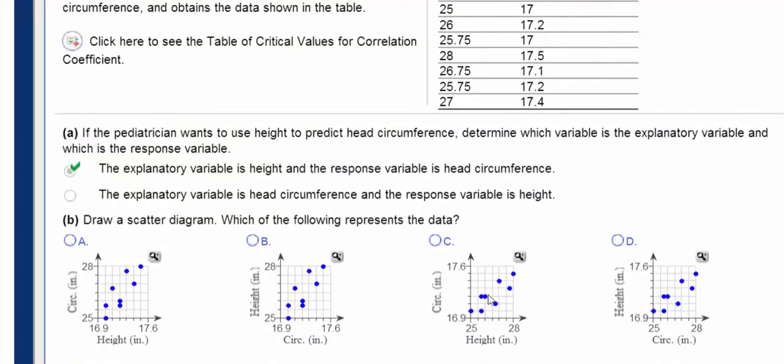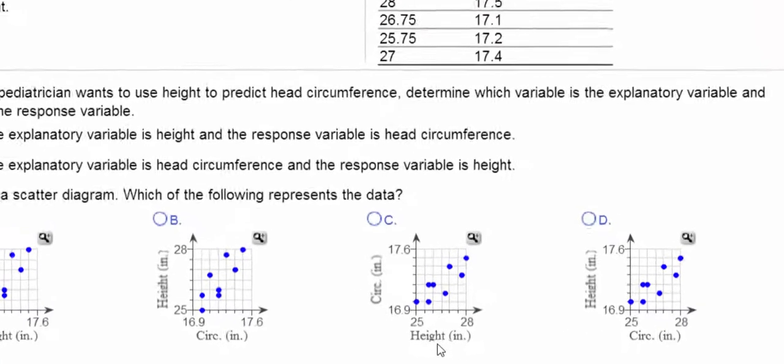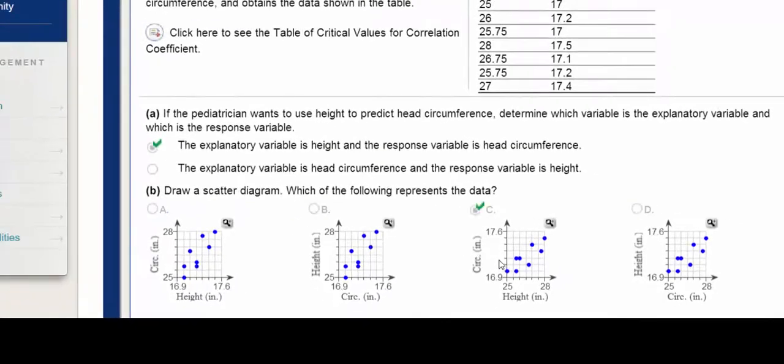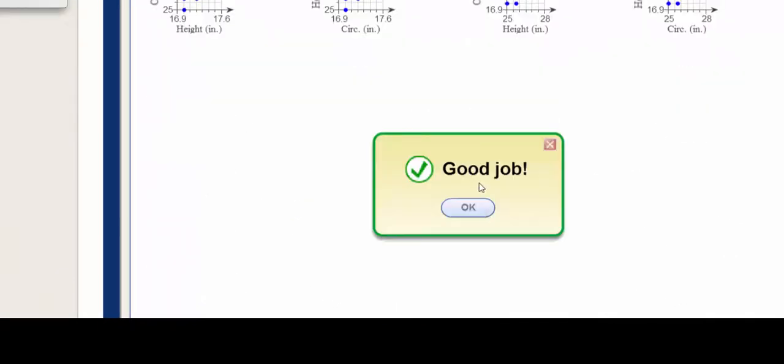So I'm thinking my choice would be either C or D. So I'm going to look at the labels here. I remember that the height was my explanatory variable and the response variable was the circumference. So I'm going to select C. I press enter. I get the check mark and it says good job.